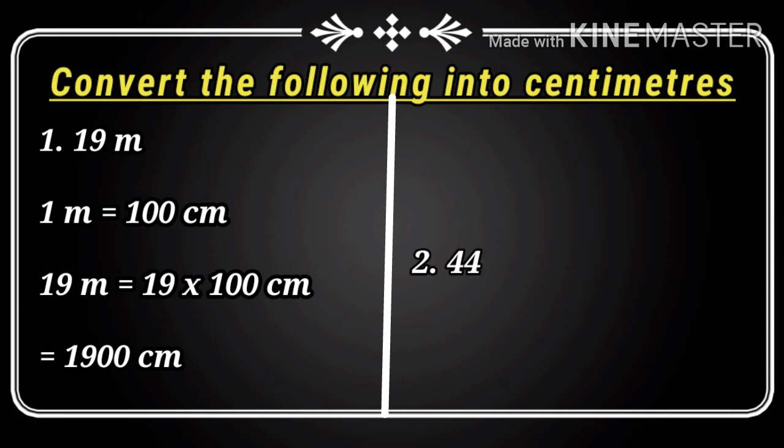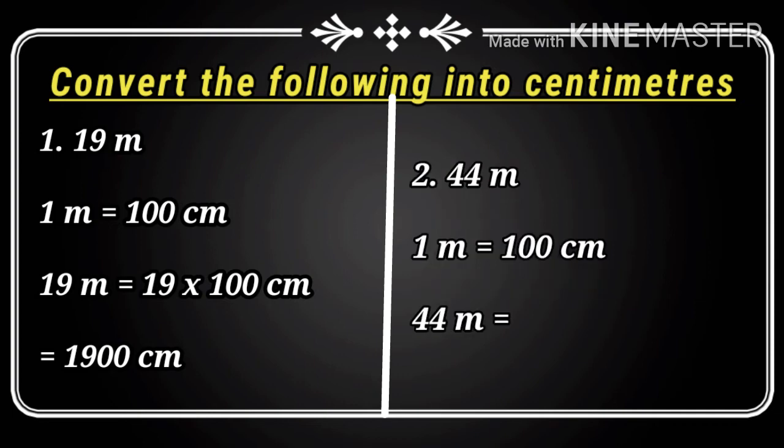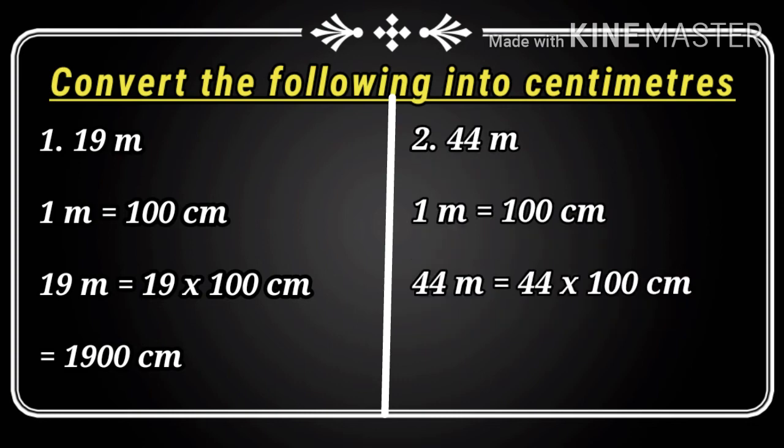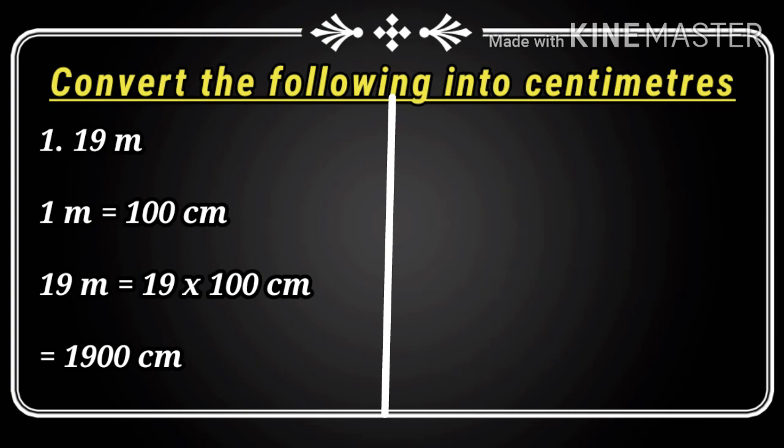I will tell you a trick here. If you have not been given a decimal number, then to convert into centimeters, you have to add two zeros. Like 44 meters, so 44 meters multiplied by hundred, I have to write 4400. Because it is not decimal, we can multiply it by adding two zeros.